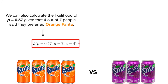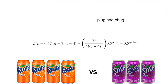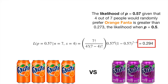We can also calculate the likelihood of p equals 0.57, given that 4 out of 7 people said they preferred Orange Fanta. Plugging and chugging through the math gives us 0.294. The likelihood of p equals 0.57, given that 4 out of 7 people would randomly prefer Orange Fanta, is greater than 0.273 — the likelihood when p equals 0.5.